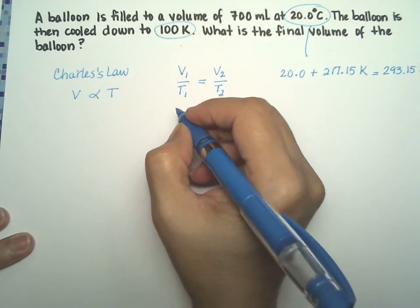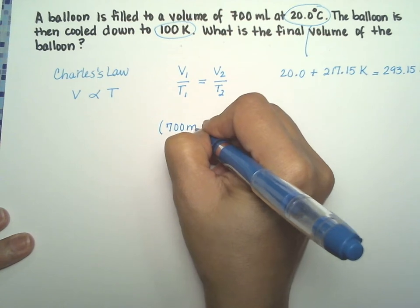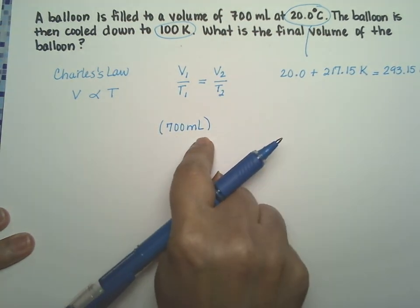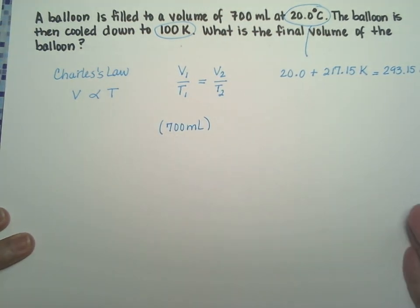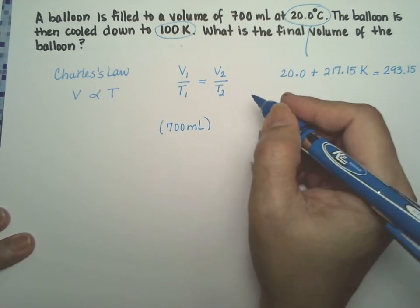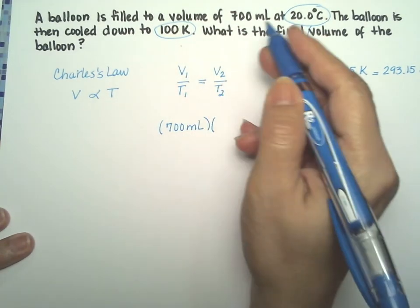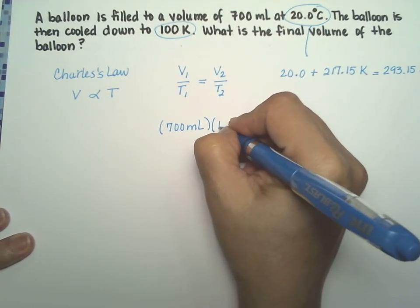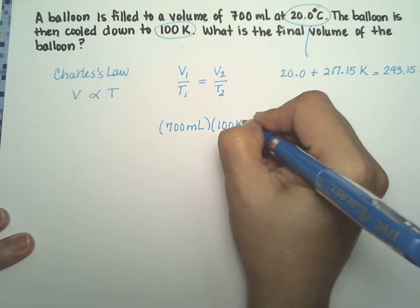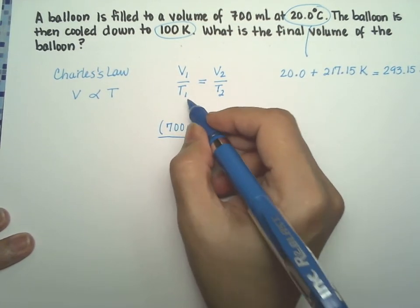So let's go ahead and I'm going to use the volume in milliliters. That means that the volume that I'm going to get at the end is also going to be in milliliters. T2 comes over here on the other side, and that one is 100 Kelvins, and I divide it by T1.